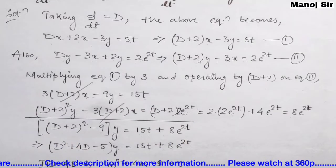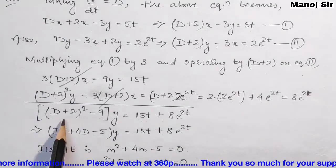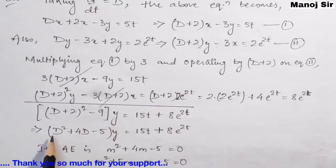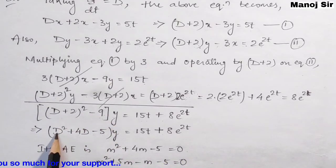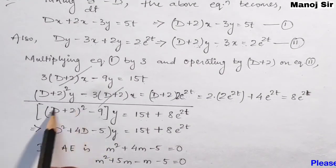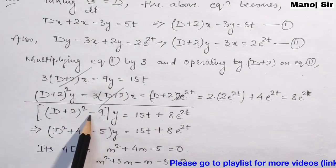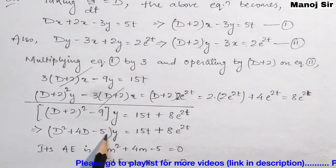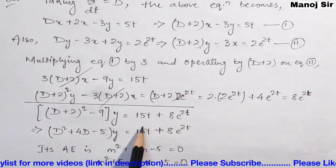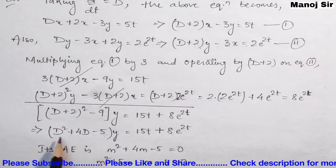Expanding (D+2)² − 9: this gives D² + 4D + 4 − 9 = D² + 4D − 5. So the equation becomes (D² + 4D − 5)y = 15t + 8e^(2t).